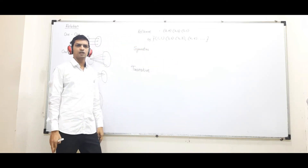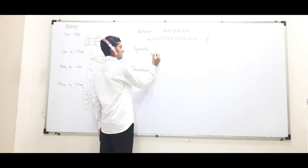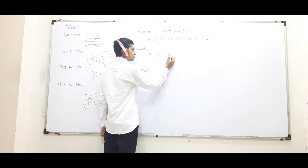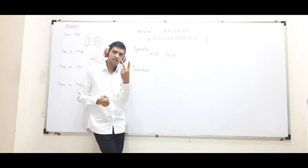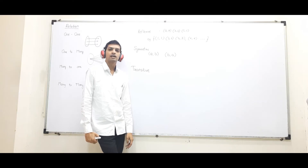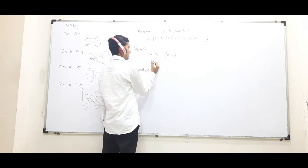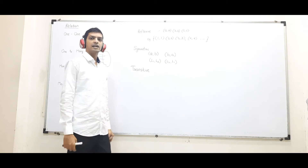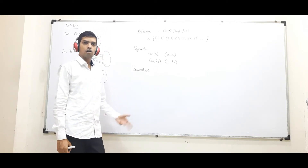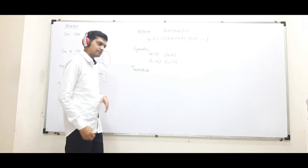Such a relation is called a reflexive relation, and this is true for every real number. Then we have symmetric: if there is an ordered pair (a,b) and at the same time there is also (b,a), then that relation is called symmetric. For example, if line l1 is perpendicular to l2, then by default l2 is also perpendicular to l1. Also, the congruency relation is symmetric: if a = b, then b = a.